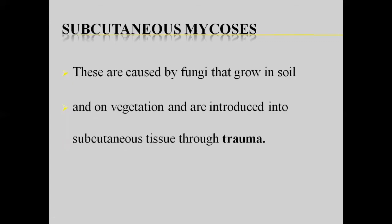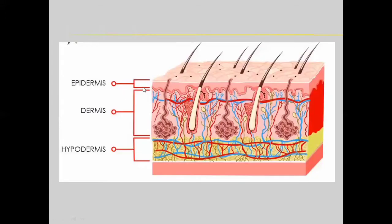Next is subcutaneous mycoses. In subcutaneous mycoses, the fungi invade more deeply — past the epidermis. Subcutaneous means the dermis layer is involved. Fungi cannot directly reach the dermis under normal circumstances, but in cases of trauma or skin injury — a rupture or wound — they can be implanted deeper.